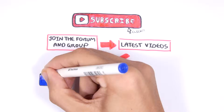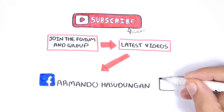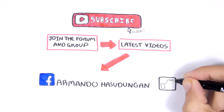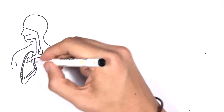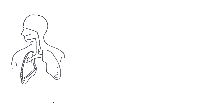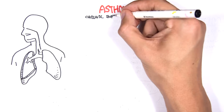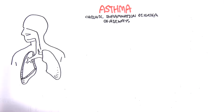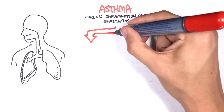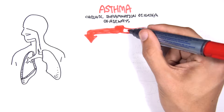In this video we're going to talk about asthma. Asthma is defined as a chronic inflammation disorder of airways.